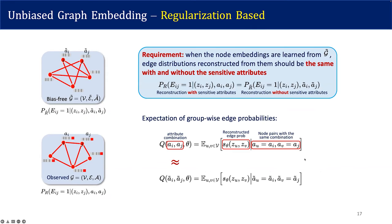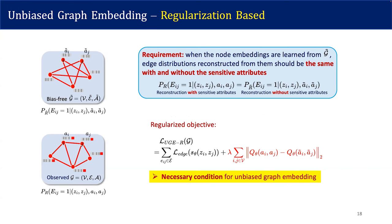Besides the weighting-based method, we also develop a regularization-based method. The basic intuition is that when node embeddings are learned from a bias-free graph, the edge distributions reconstructed from the embeddings should be the same with and without sensitive attributes. To describe the edge distributions, we take the expectation of reconstructed edge probabilities in groups defined by node attributes. With and without sensitive attributes we get different node groups, and we require the expected edge probabilities in groups to be the same as long as the non-sensitive attributes of the two groups are the same. This way, we add a regularization term to enforce embeddings to be learned from a bias-free graph, giving a necessary condition for unbiased graph embedding.